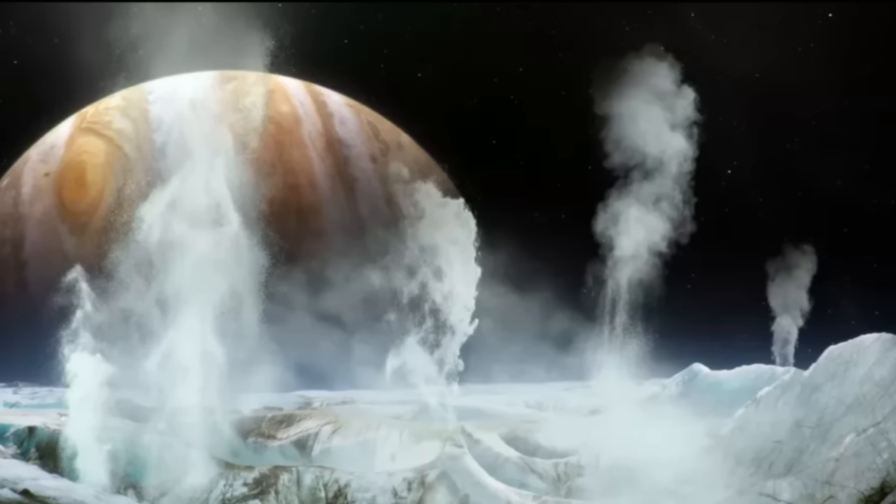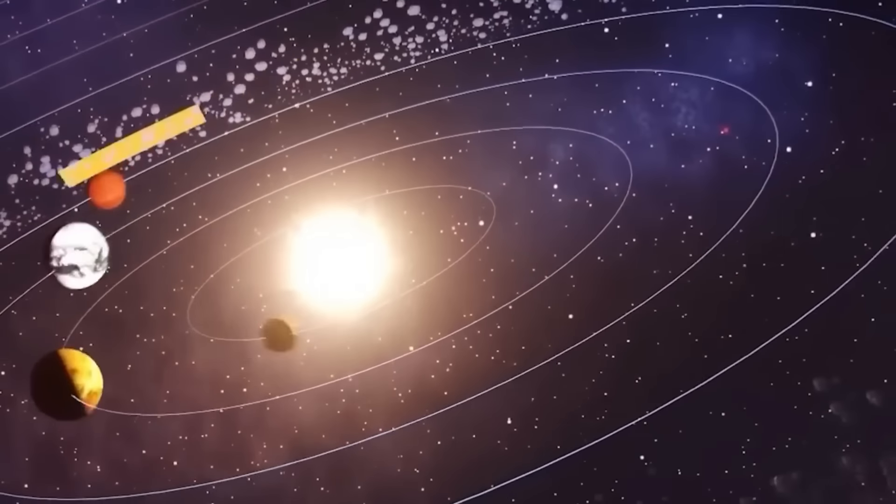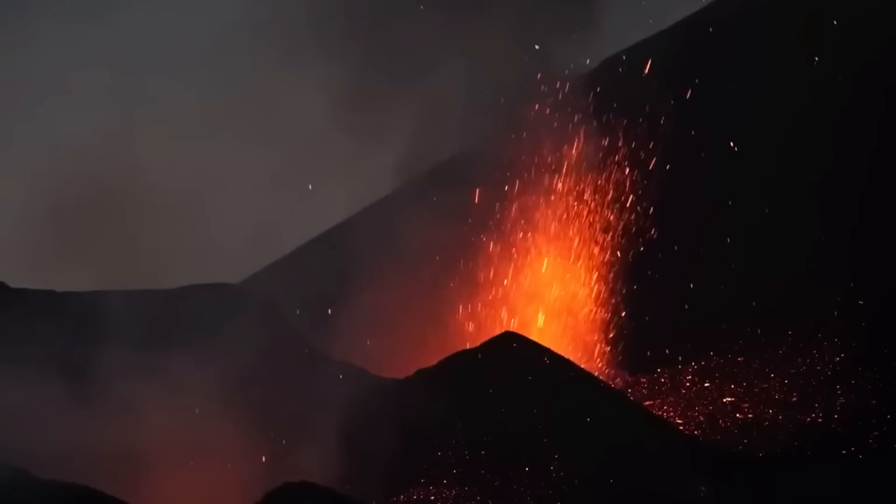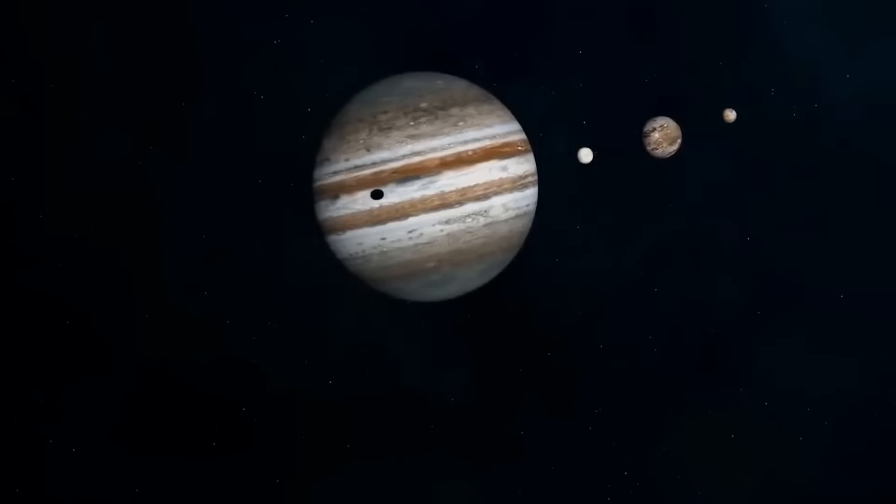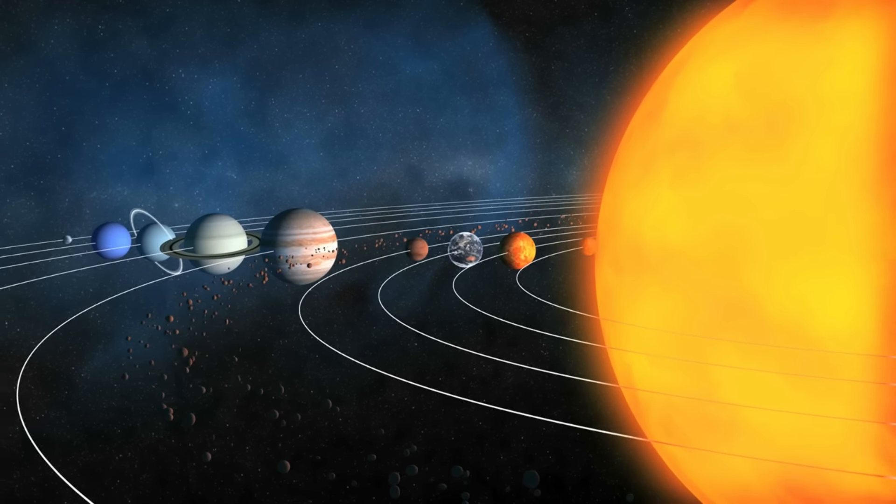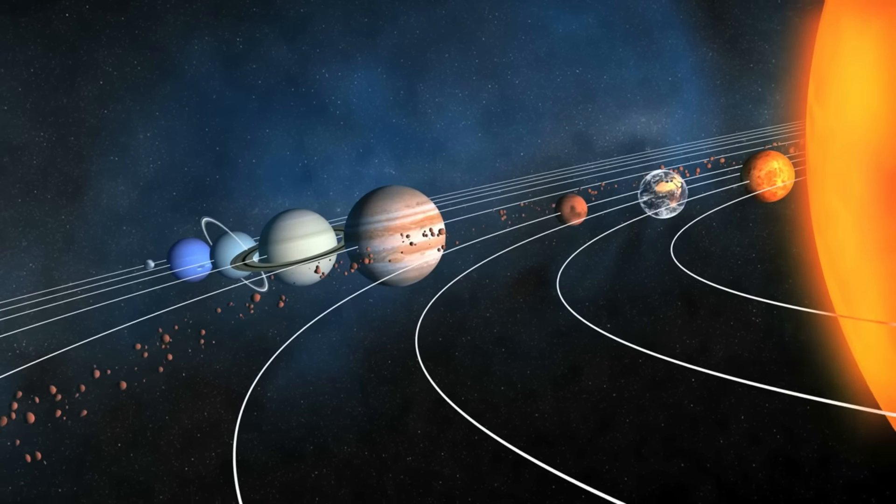These missions have yielded startling discoveries concerning many stars and planets, such as the presence of water on Europa, the identification of the largest natural satellite in the solar system, and the discovery of active volcanoes on Io.